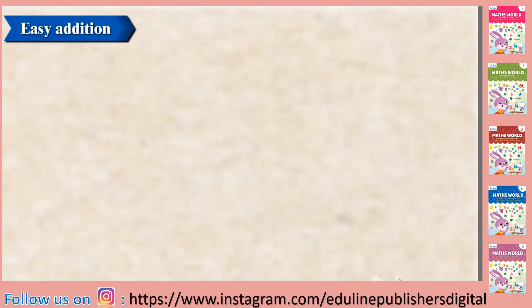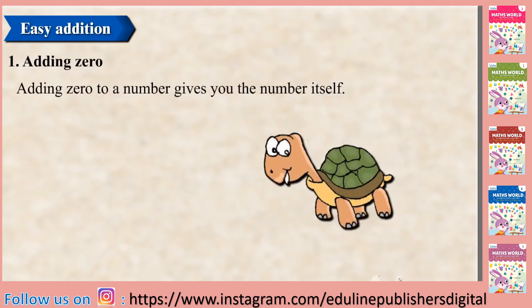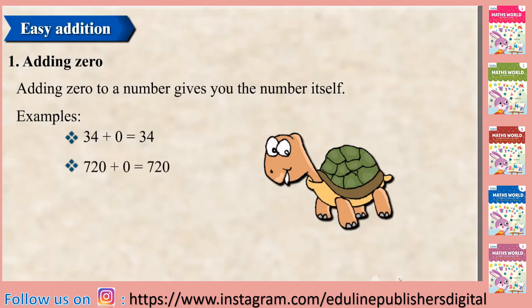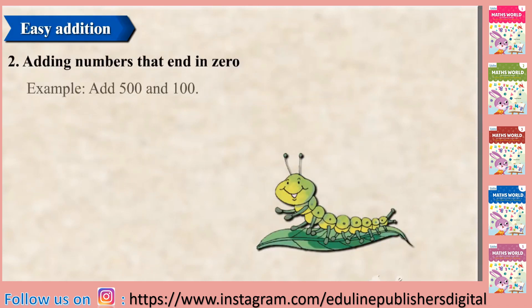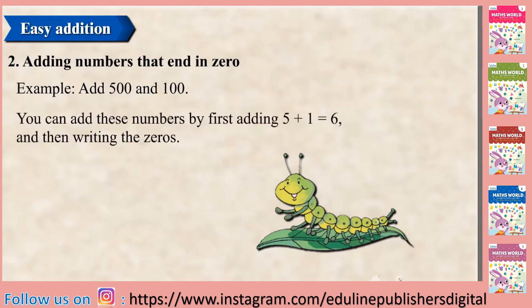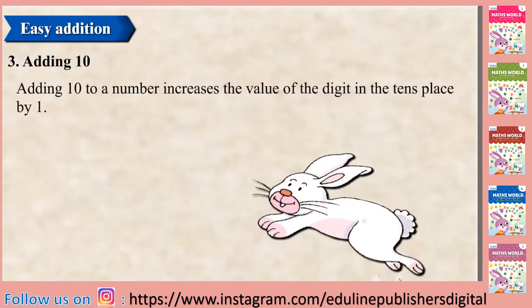Easy Addition. Adding 0: Adding 0 to a number gives you the number itself. Examples: 34 plus 0 is equal to 34; 720 plus 0 is equal to 720. Adding numbers that end in 0: Add 500 and 100 — 500 plus 100 is equal to 600.